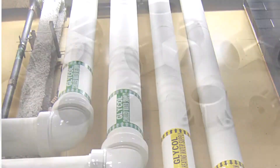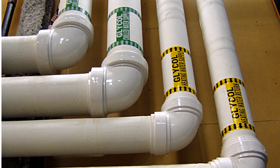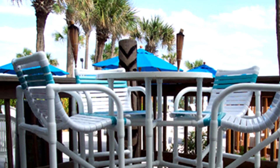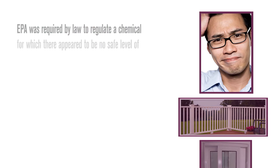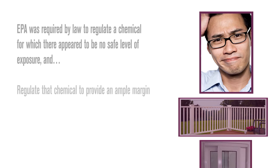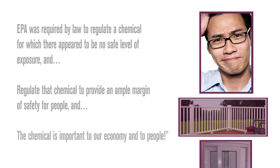The issue of what constitutes an ample margin of safety came to a head when EPA tried to regulate a chemical called vinyl chloride. This chemical is the main component of PVC pipes and a lot of plastics — we use PVC in a variety of ways, and almost any home you visit these days has PVC pipes and a good deal of other PVC plastic items. So here EPA was faced with a conundrum: required by law to regulate a chemical for which there appears to be no safe level of exposure, and yet the chemical is important to our economy and to people.